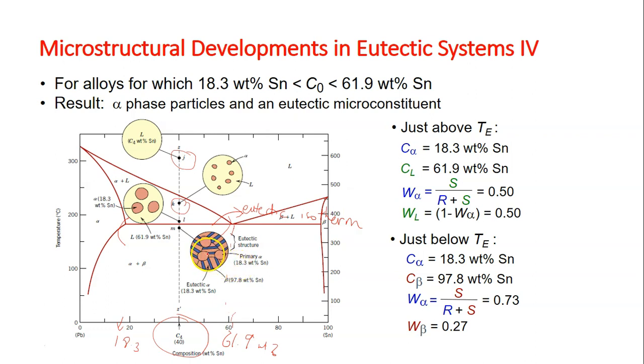Insignificant changes occur with the alpha phase that formed during cooling through the alpha plus liquid region. Alpha phase is present both in the eutectic structure and as the phase that formed while cooling through the alpha plus L phase field.